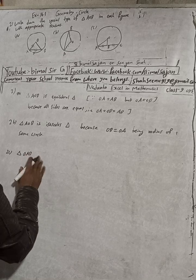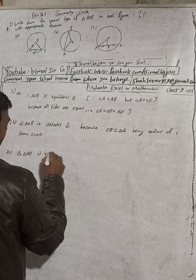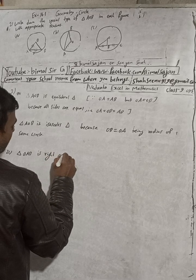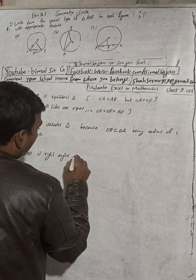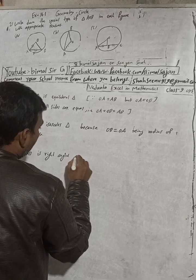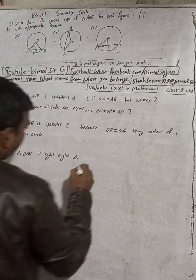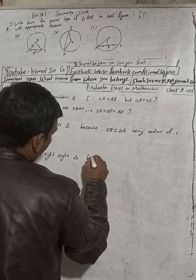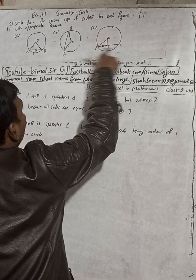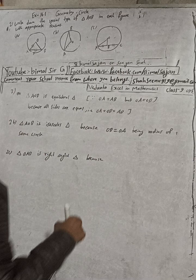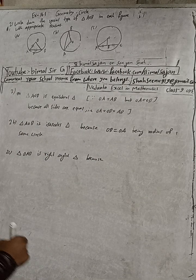Triangle AOB is a right angle triangle, because the line joining the center of the circle and the midpoint of the chord is perpendicular. The line joining the midpoint of a chord and the center of a circle is perpendicular to the chord.